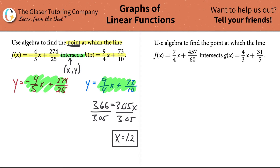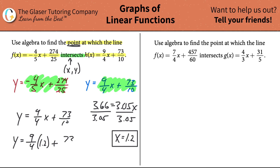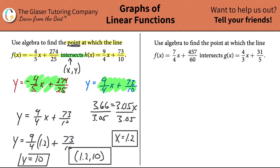I'll use the blue equation: y equals 9/4 x plus 73/10. Plugging in x = 1.2: 9/4 times 1.2 plus 73/10 gives exactly 10. So y equals 10. Now we know both coordinates, so the point of intersection is (1.2, 10). You can convert the decimal to a fraction if needed.